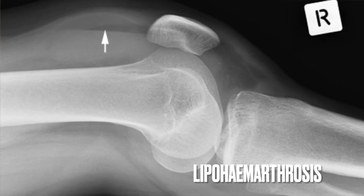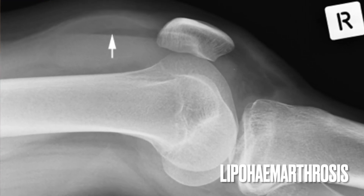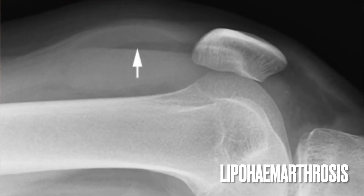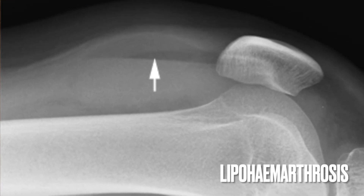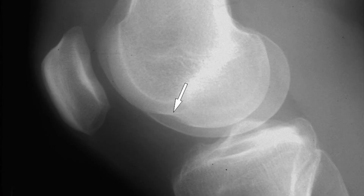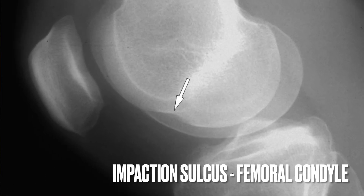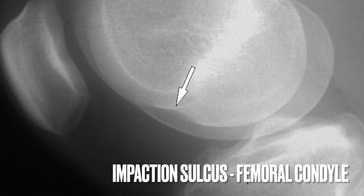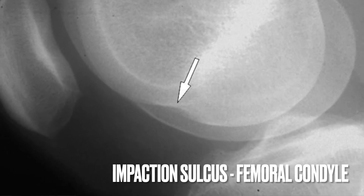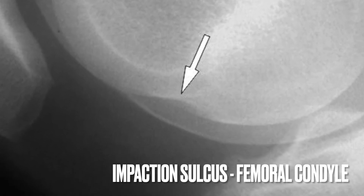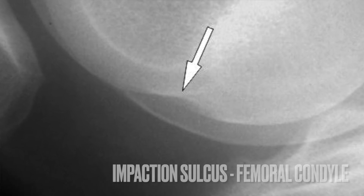On the lateral view, this can demonstrate an effusion or lipohemarthrosis, which is fat and blood in the joint. The lateral view can also demonstrate an impaction sulcus in the lateral femoral condyle, and when that's present it is again very suggestive of an injury to the anterior cruciate ligament.